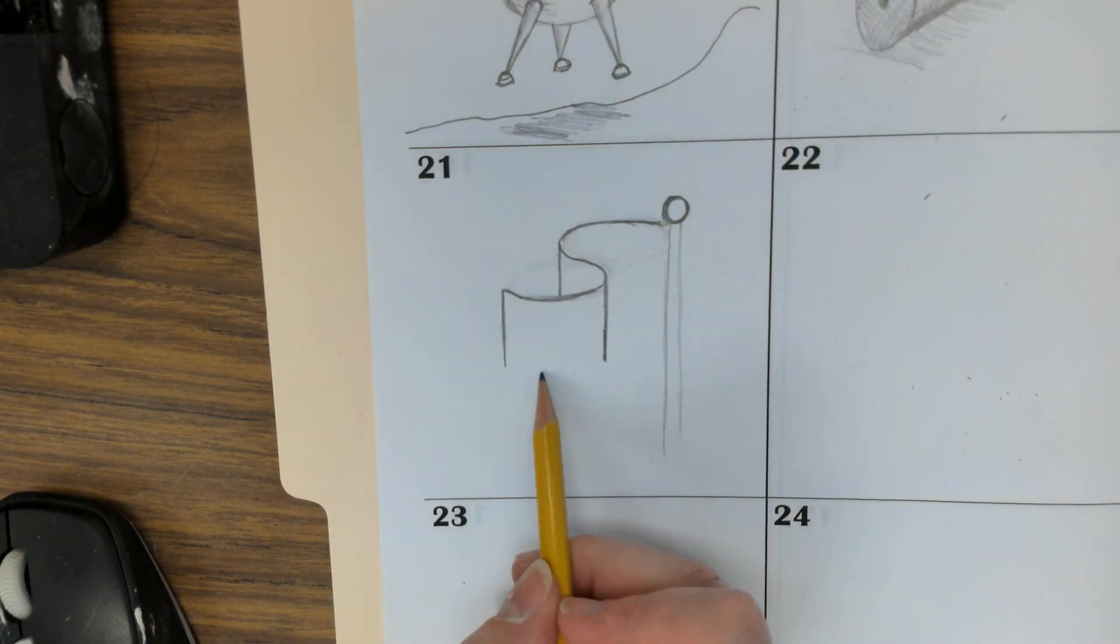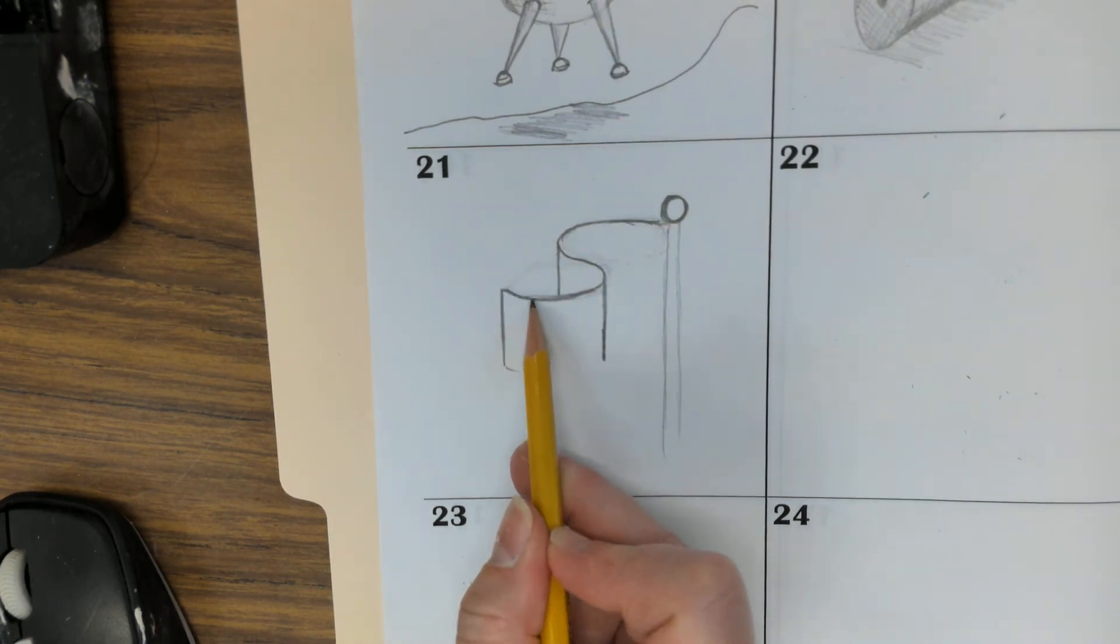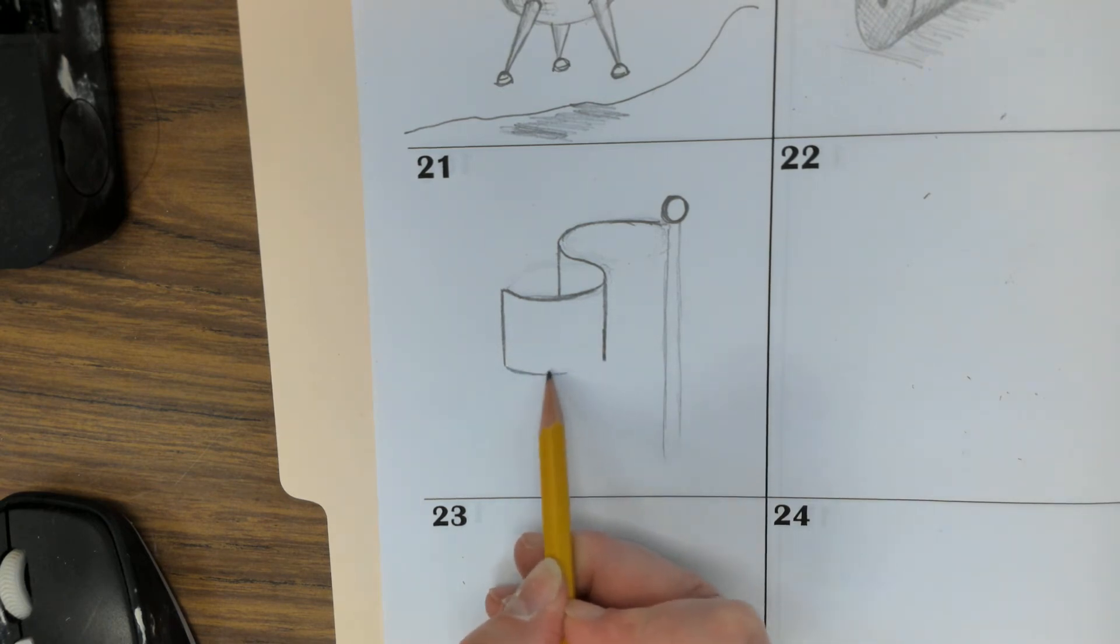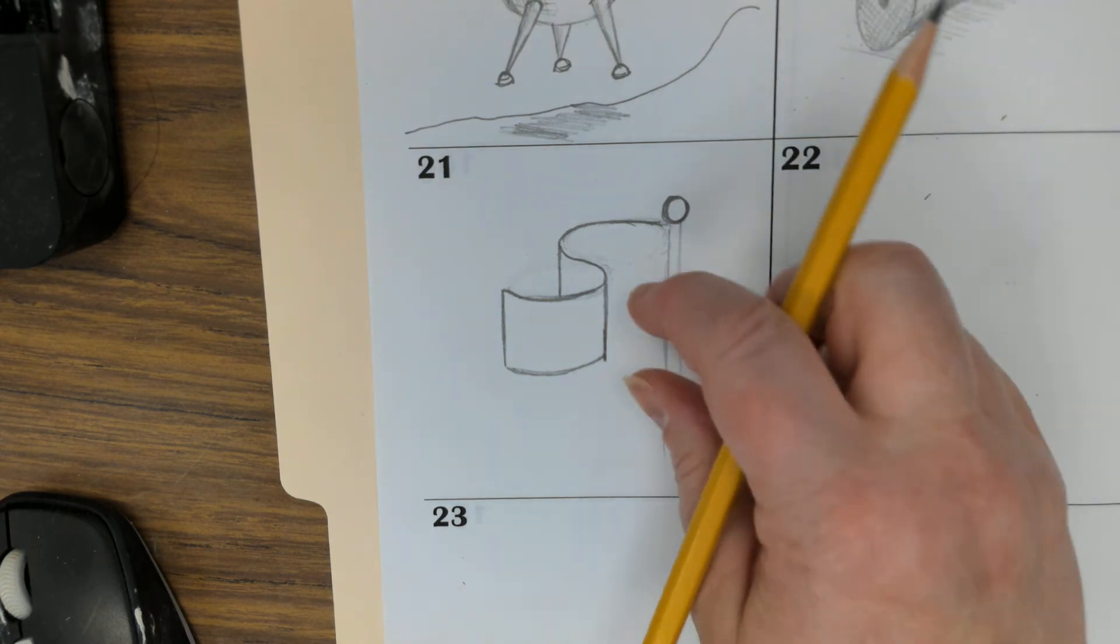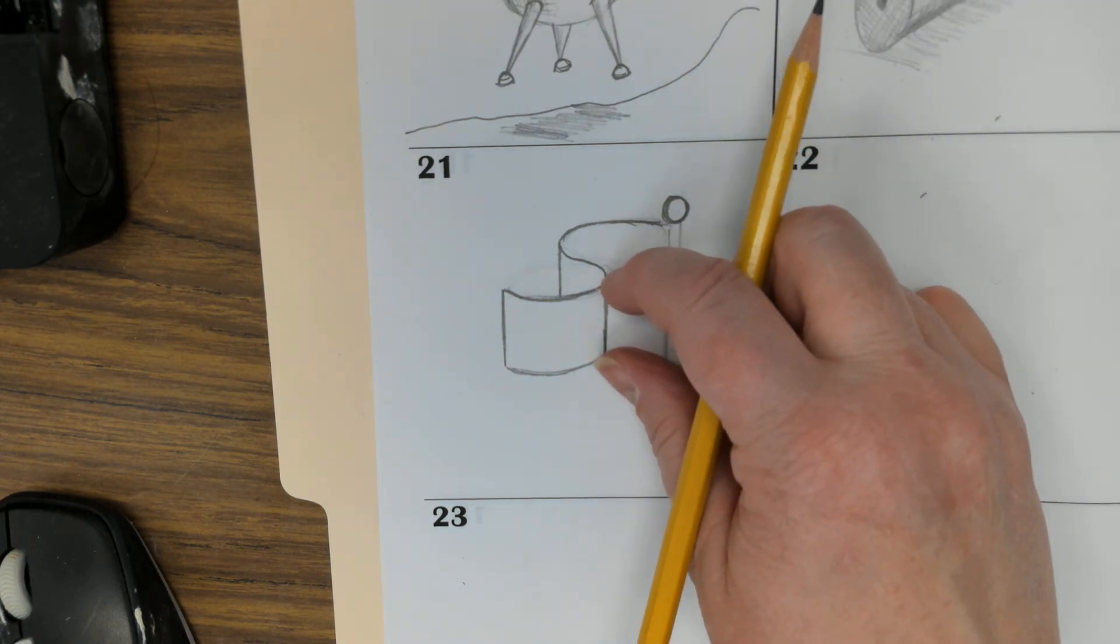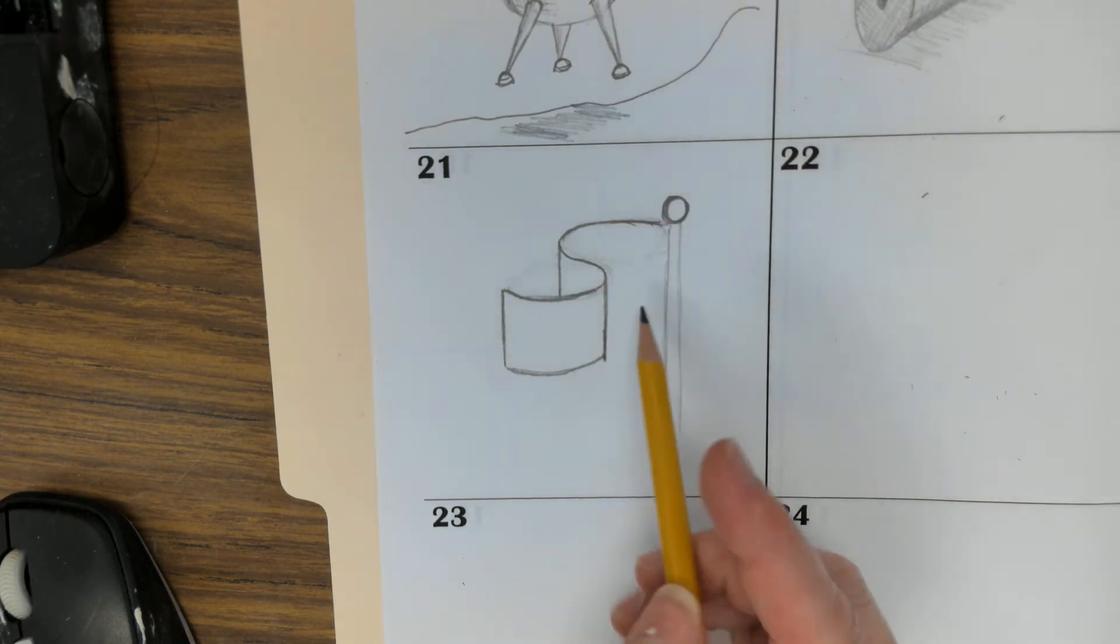We'll pull a curved line. Whatever this curve is here will match this curve here. Whatever this curve is up here, we're going to try and imagine this distance that's here, up here. And then this distance will go here.